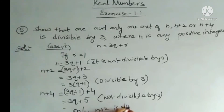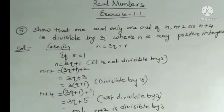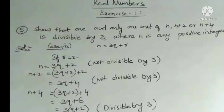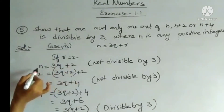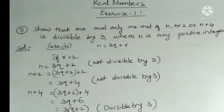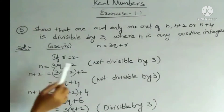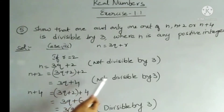In Case 3, r = 2. If r = 2, then n = 3q + 2, which is clearly not divisible by 3. Then n + 2 = (3q + 2) + 2 = 3q + 4, which is also not divisible by 3.